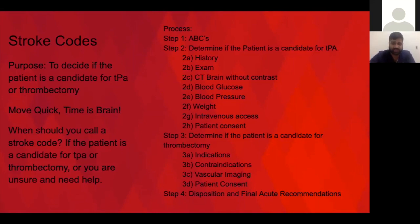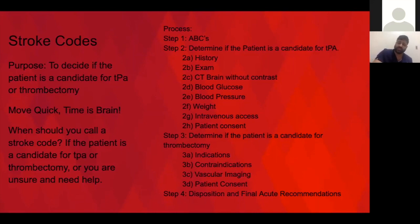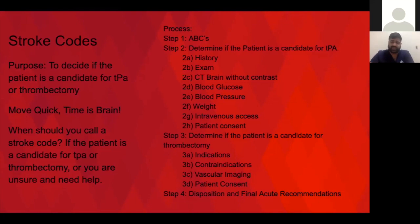After making a decision about TPA, you move on to deciding about thrombectomy. For thrombectomy, you need a large vessel occlusion, so we do vascular imaging — typically CTA since it's the fastest. We're looking for proximal occlusions in the M1, distal M2, internal carotid artery, or posterior circulation like the basilar. For thrombectomy you definitely need formal patient consent. After that, we decide where the patient needs to go — sometimes the stroke service, sometimes the neuro ICU — and give final recommendations on blood pressure goals and stroke workup.